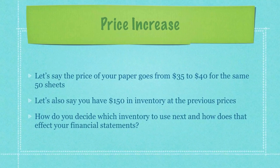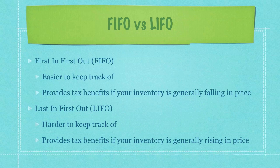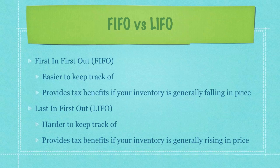Let's say the price of your paper goes from $35 to $40 for the same 50 sheets you were previously purchasing. Let's also say you have $150 in inventory at the previous prices. How do you decide which inventory to use next and how does that affect your financial statements? There are two ways of handling inventory changes such as this. You can handle that inventory as first in first out, which is easier to keep track of because you can quickly get rid of your old inventory, and also provides tax benefits if your inventory is generally falling in price.